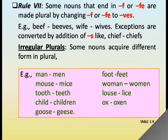Some nouns that end in F or FE are made plural by changing F or FE to VES. Example: beef — beeves; wife — wives. Exceptions are converted by addition of S, like chief — chiefs.